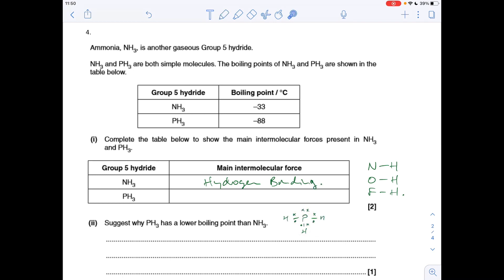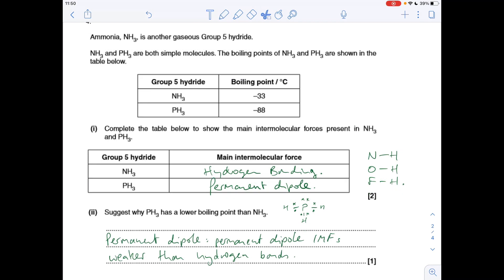I've just quickly drawn a dot and cross diagram for the PH3 molecule. You can see we've got a lone pair there, so that's going to make this molecule polar. Therefore, it's going to have permanent dipole intermolecular forces. Next part of the question is testing our knowledge of the relative strengths of the intermolecular forces. Why would PH3 have a lower boiling point than NH3? We just need to say permanent dipole-permanent dipole intermolecular forces are weaker than hydrogen bonds.